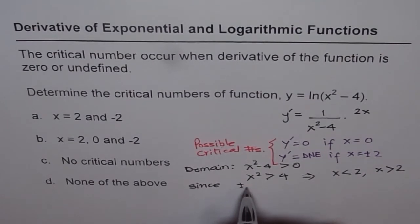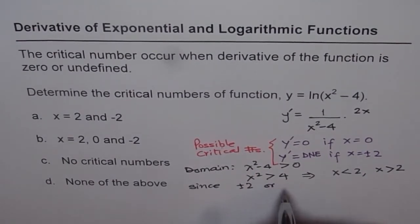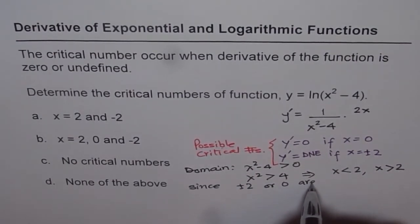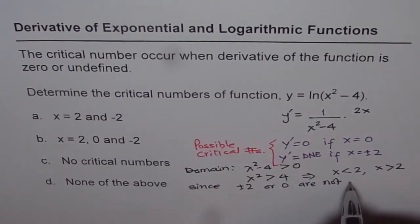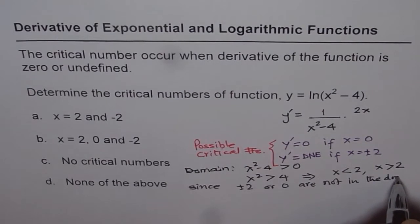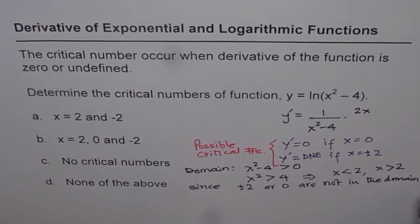Since plus or minus 2 and 0 are not in our domain, we don't have any critical numbers for this.